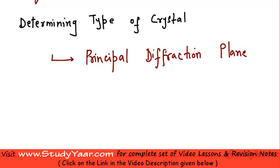Your principal diffraction plane is essentially a plane with high atomic density. So it is a plane through which large number of atomic centers pass through.